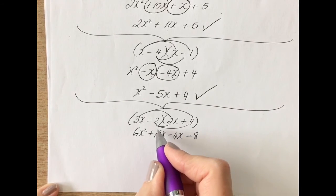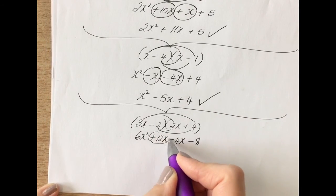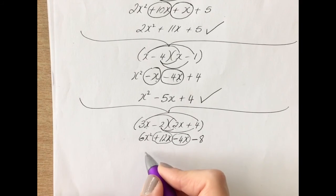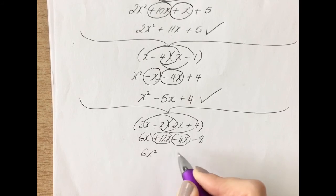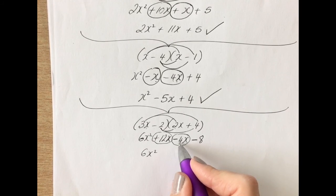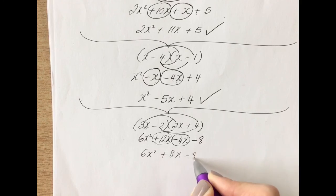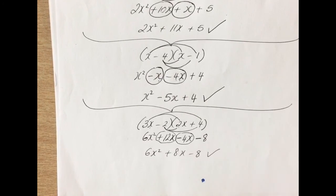Now we're adding, so 12x take away 4x leaves us with 6x squared. 12 take away 4 is the number work. 12x take away 4x is 8x minus 8, and that's your final answer.